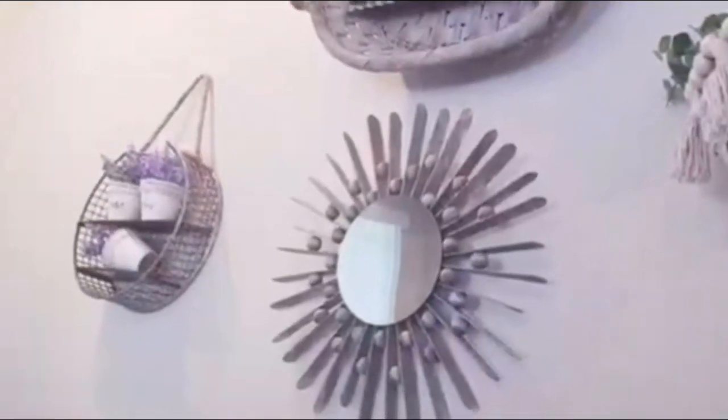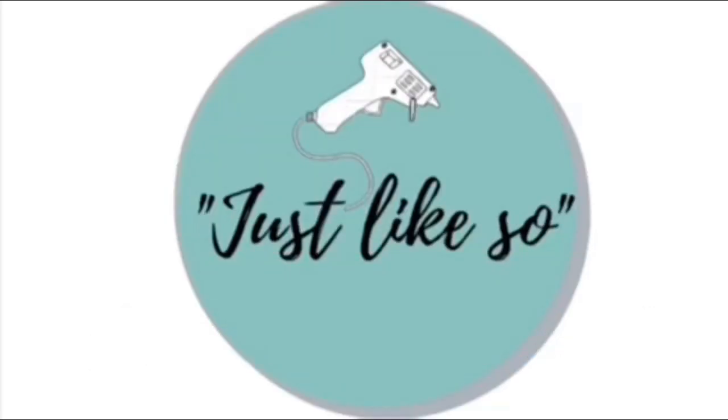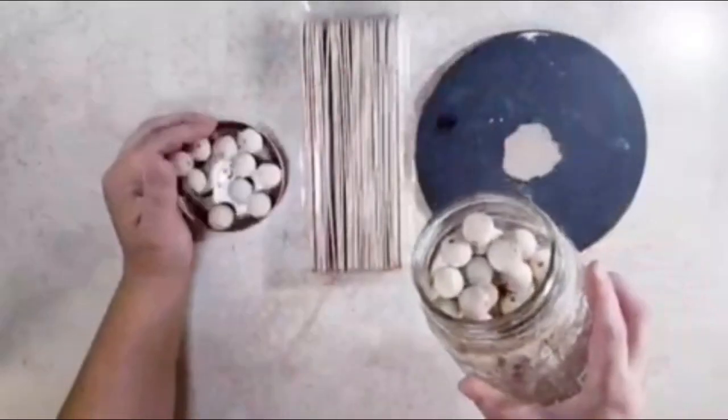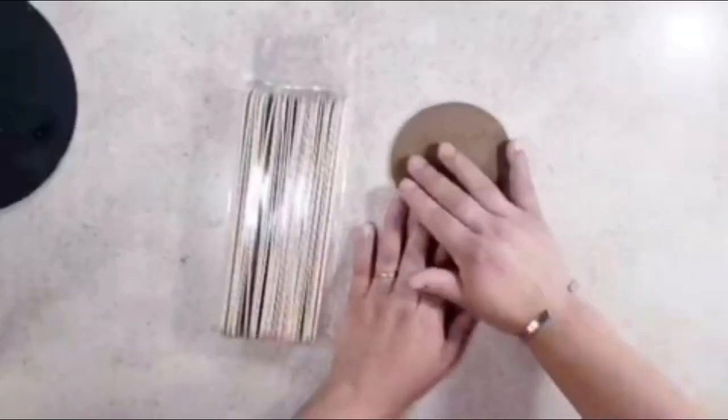My first DIY will be this beautiful wall decor mirror. The materials I will be using are some popsicle sticks, this little circle decor and this mirror that I have used in some of my previous DIYs, as well as these wooden beads that I got from Amazon.